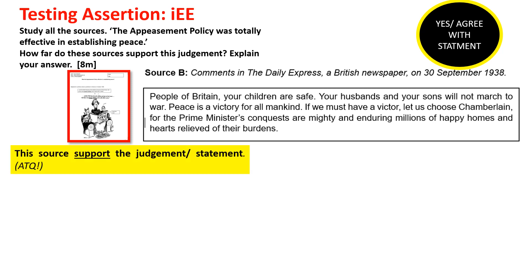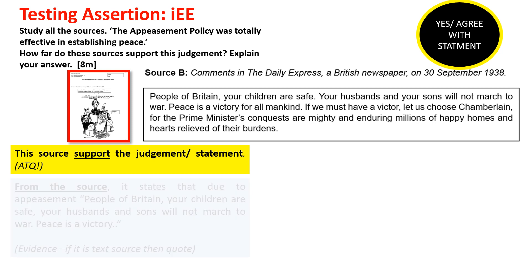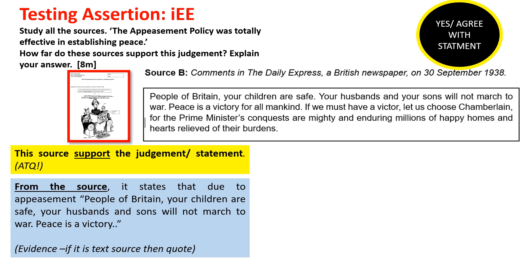So how does it look like? The source supports the judgment and the statement. From the source, I am giving the source detail or the evidence. If it is a text source, then you quote — you quote the particular source details that will support this. And lastly, 'this suggests that appeasement was successful as it avoided war, which meant it would be successful in establishing peace.' Explanation is there. So quite easy — you give me one yes, one no, and you would already get five marks.